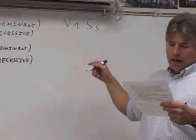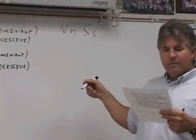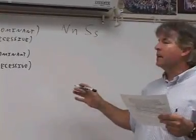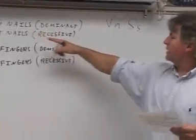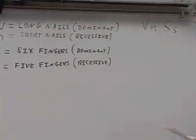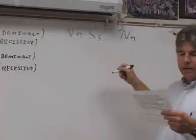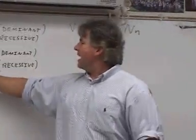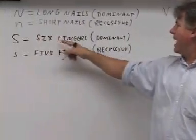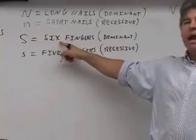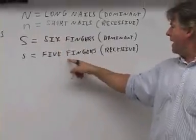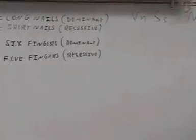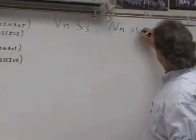Then it says he's crossed with a female who is heterozygous for nails but has five fingers. The female is heterozygous for nails, so she's got to be big N, little N — one of each. But she's only got five fingers. To have five fingers, you can't have a big S because that's dominant and would give her six fingers. So to have five fingers, the only thing she can have is two little S's.